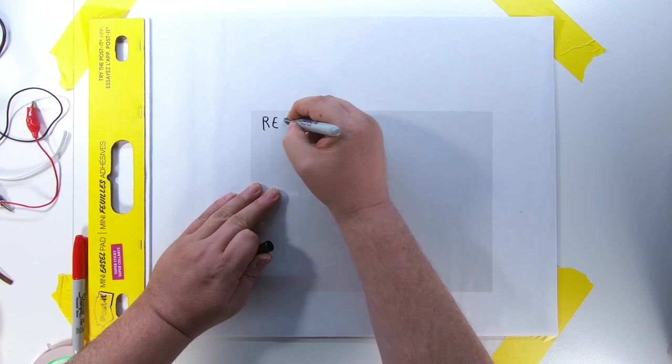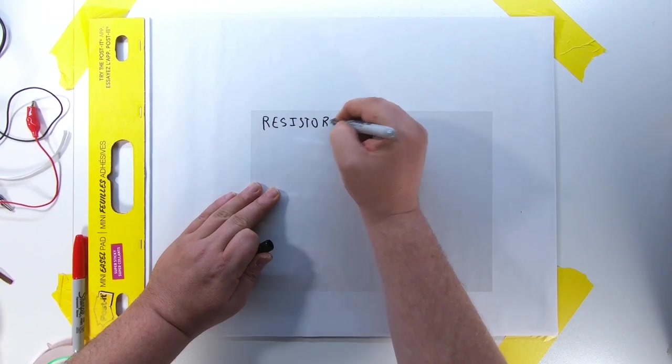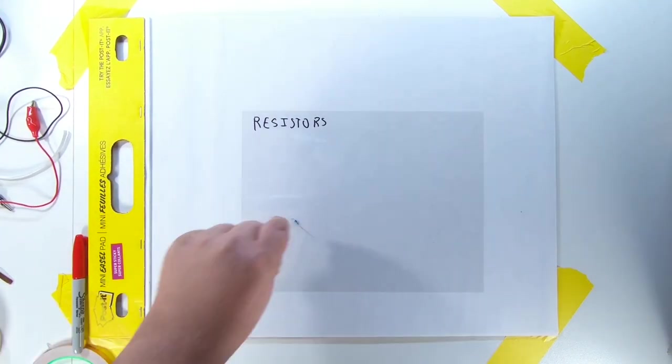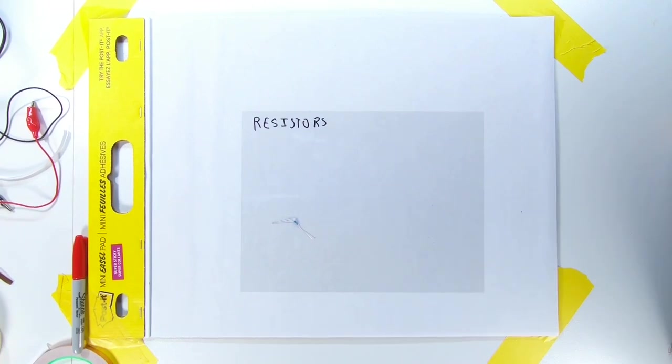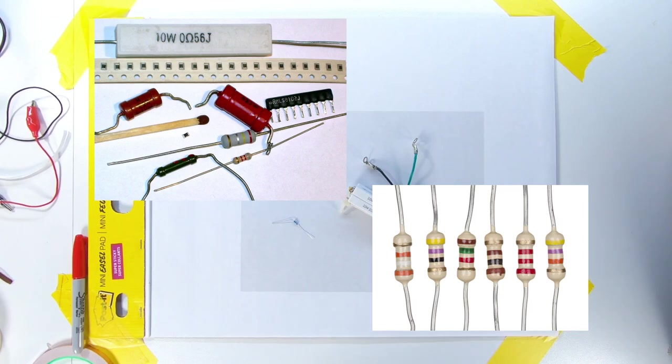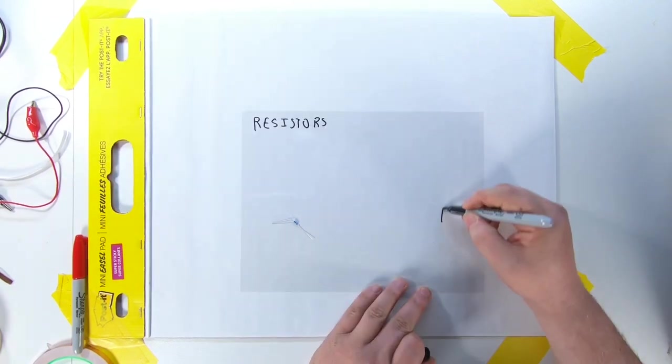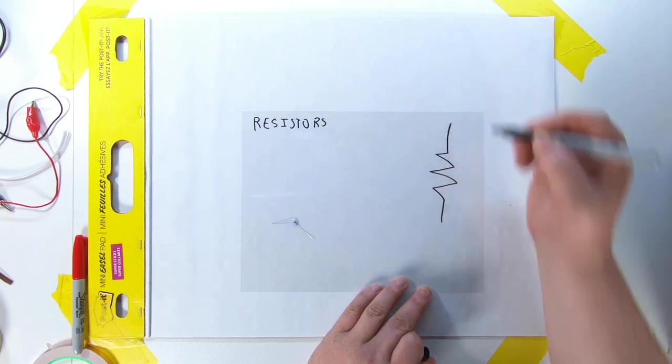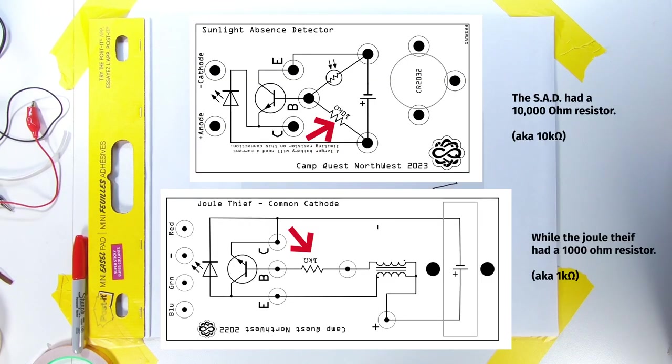The first component we're going to talk about is the resistor. I have one here. It's kind of small, so let me get a couple larger ones. The symbol of the resistor is a series of angles in sort of a squiggle. Both the sunlight absence detector and the jewel thief have them.